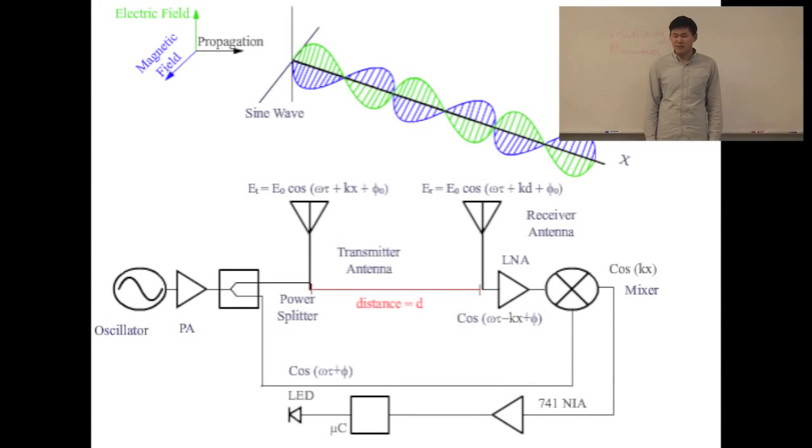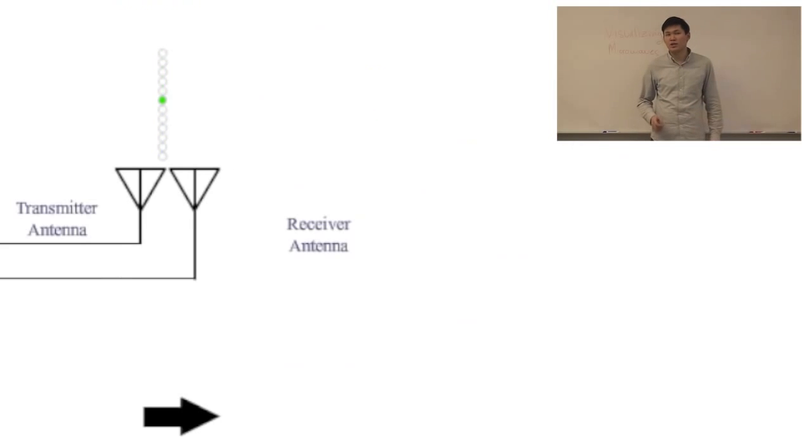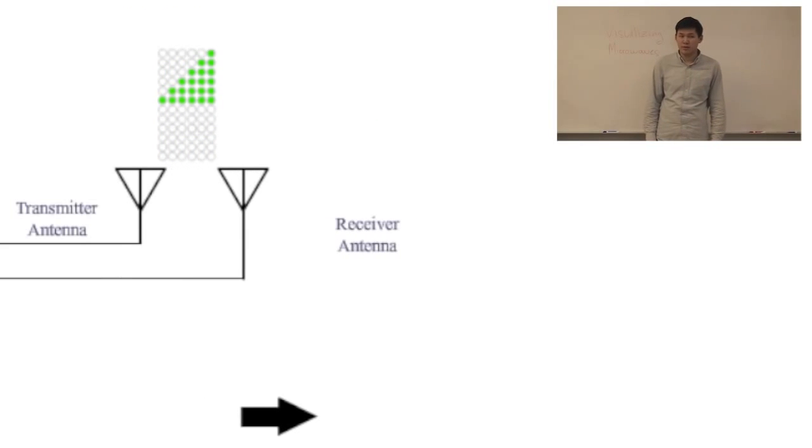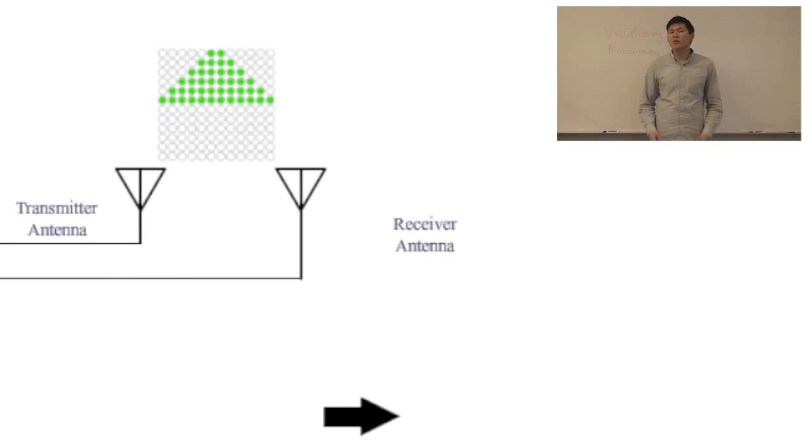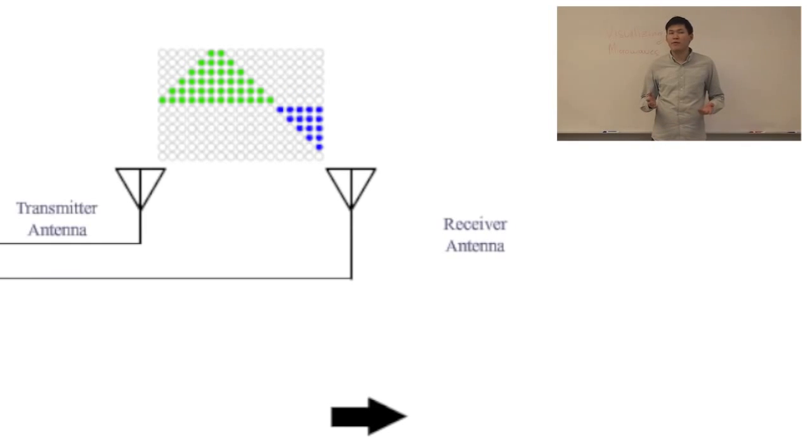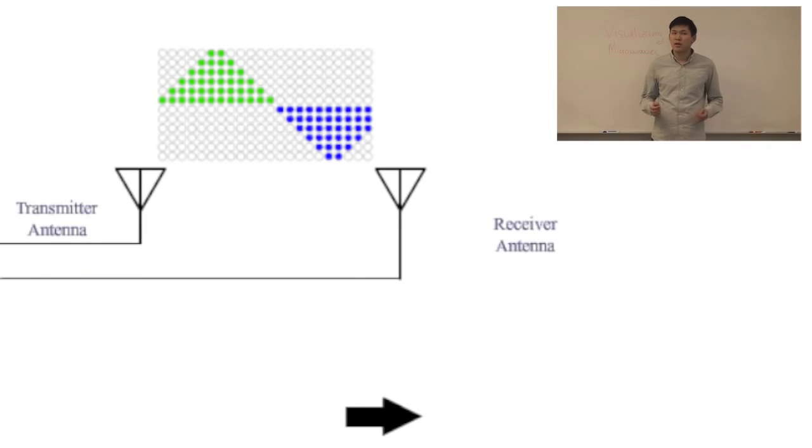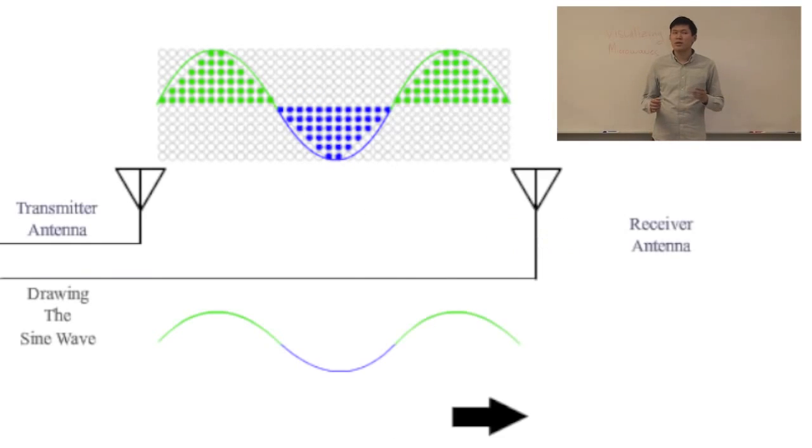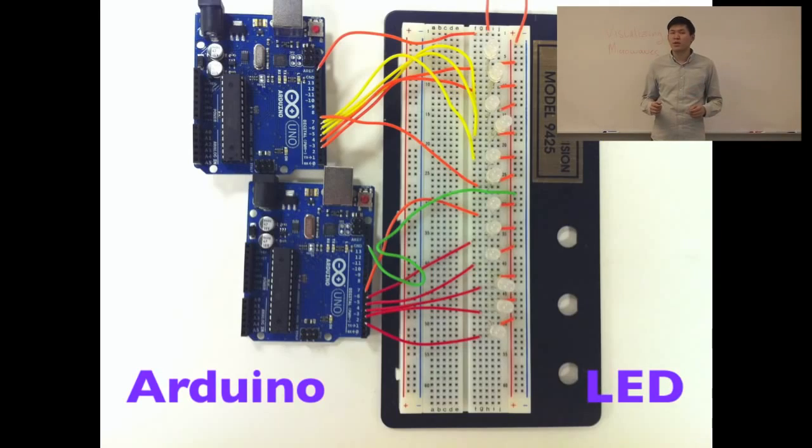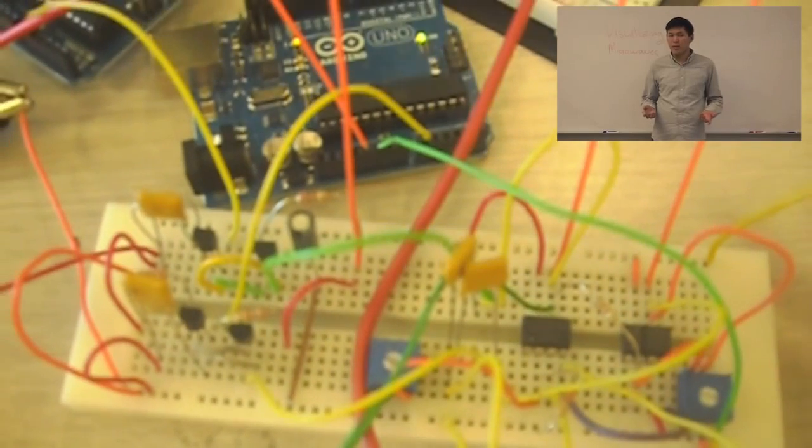Now to the part where we actually visualize the wave. We use a microcontroller to control an array of LEDs to display the strength of the mixer's phase difference output. The number of illuminated LEDs is proportional to the strength of the phase difference output of the mixer. The color of the LEDs corresponds to the sign of the wave amplitude, with positive being blue and negative being green.